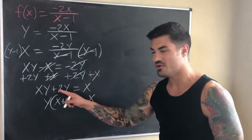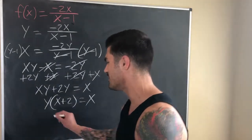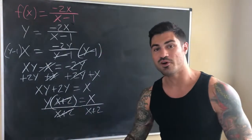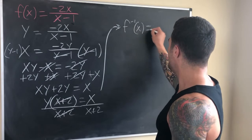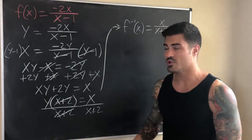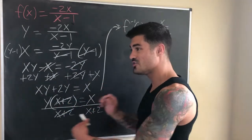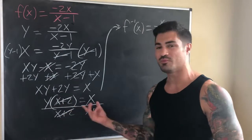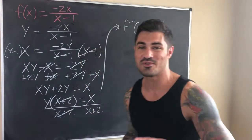Now I can do something clever — factor. I can factor out the y, and look what happens: y times (x + 2) equals x. Now I only have one y, and it's being multiplied by (x + 2). Since I have y times something and I'm solving for y, I just divide both sides by (x + 2). That cancels, leaving y by itself. So f⁻¹(x) = x / (x + 2). Any time y appears in multiple terms, get all y-terms on one side, factor out the y, then divide by whatever it's being multiplied by.